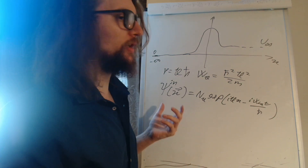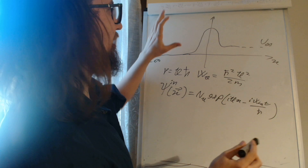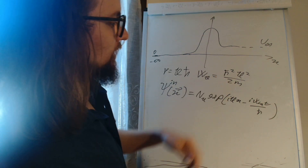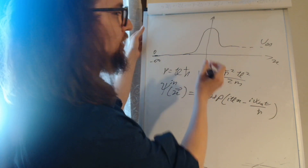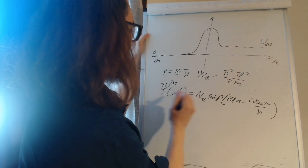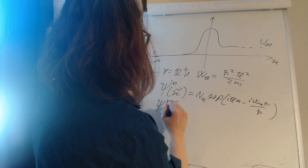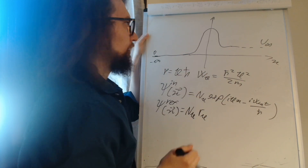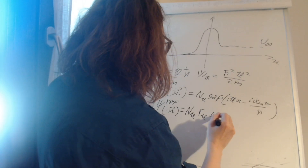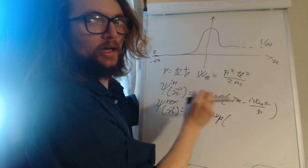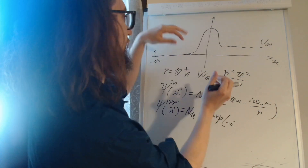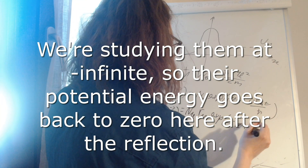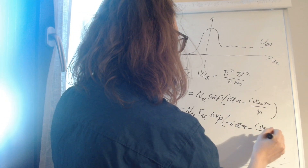Since we are only interested in the effects of the collisions, we are going to study the particles at infinity, far from the potential barrier after the collision. These were the particles before the collision — the incoming particles. After the collision we will have reflected particles located at minus infinity because they come back. So we write psi reflected of x equals n_k r_k exponential of minus i k x minus i w_k t divided by h-bar, where the modulus of r_k measures the fraction of reflected particles, with momentum minus k since they travel in the opposite direction.